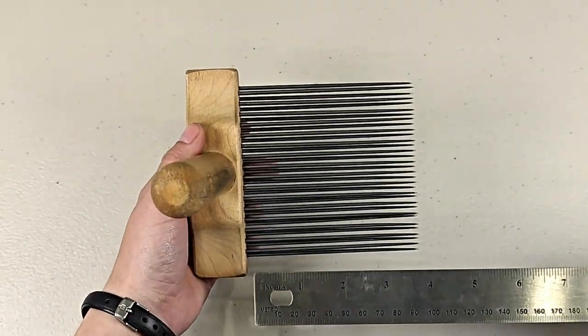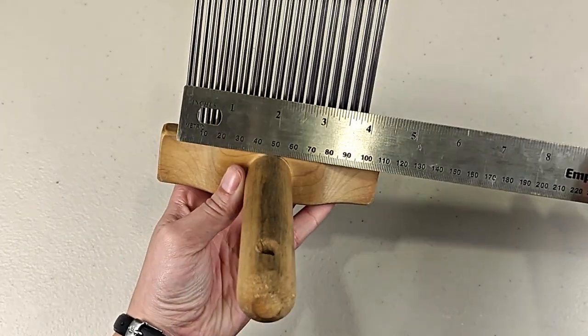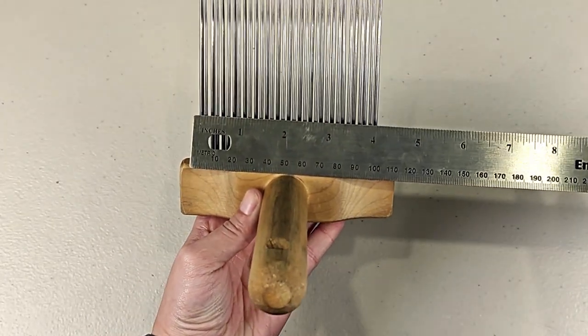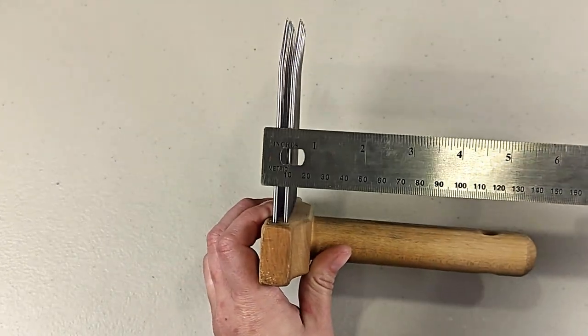First thing we're going to measure is the length of the tines. Mine are about four and a quarter inches long, the width of my tines are about four and a quarter inches, and the depth of my tines are about three eighths of an inch.